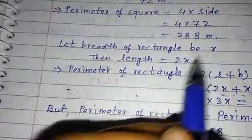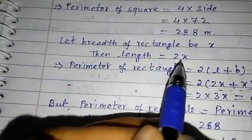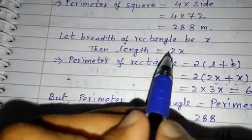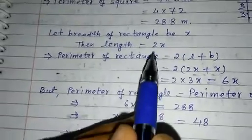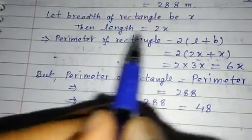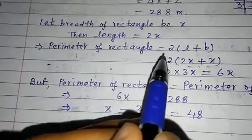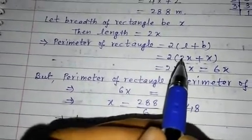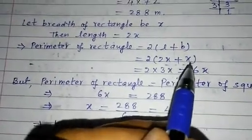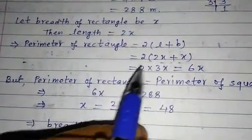So let breadth of rectangle be x. Then length equal to 2x, twice the breadth. If breadth is x, then length is 2x. So perimeter of rectangle equal to 2 into (l + b), that is putting the value of length and breadth, 2x plus x, that is 3x, and the total perimeter is 6x.